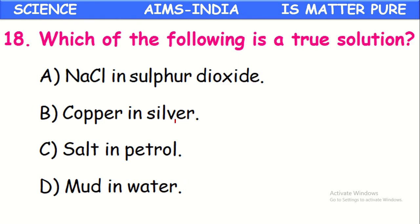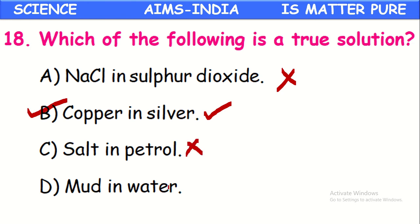Which of the following is a true solution? A true solution means both components are present in the same phase. Among the options — sodium chloride in sulfur dioxide forms a heterogeneous mixture; copper and silver, as used in ornaments where copper is mixed with silver to make it harder, both appear in the same phase forming a homogeneous mixture. Salt and petrol, and mud and water, form heterogeneous mixtures. Only copper and silver in the form of an alloy form a true solution.